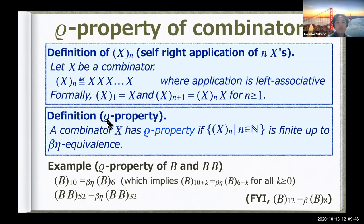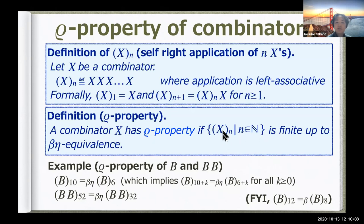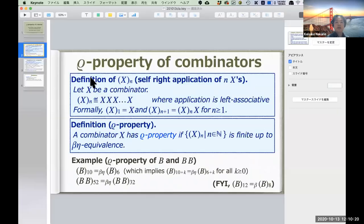Then I'd like to define the loop property. A combinator X has the loop property if the set of all X_N is finite up to beta-eta equivalence. Let me show an example to illustrate this better.